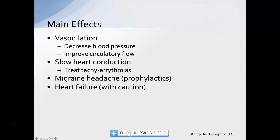The main effects we get from beta blockers are vasodilation, a decrease in blood pressure, and improved circulatory flow. When a patient starts beta blockers, they may become a little flushed — that's normal because of vasodilation. Beta blockers also slow heart conduction, so we expect to see a slowing of heart rate. They're often used to treat tachyarrhythmias. In many cases they may be used prophylactically to treat migraine headaches. They're frequently used in heart failure to turn off that sympathetic compensatory mechanism.